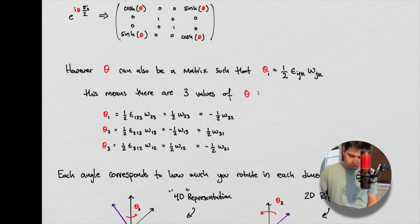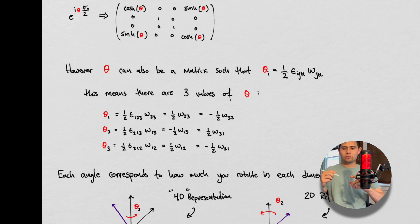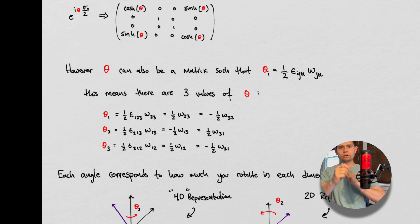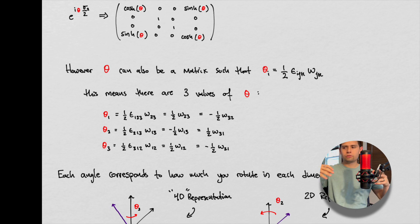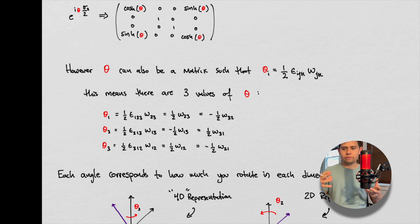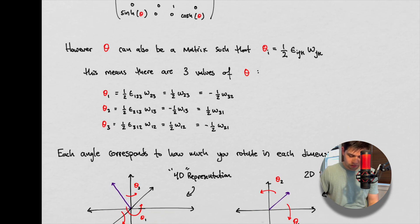What if we're talking about three-dimensional space? In one dimension you can rotate, in another dimension you can rotate, and in another dimension you can rotate. You can do this for as many dimensions as you want. So you need to find a way to encapsulate all of this into, say, one variable, which would be very nice to do.